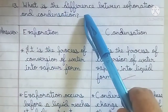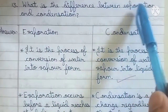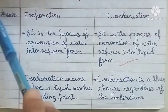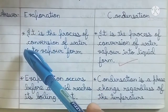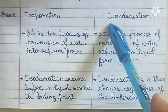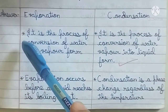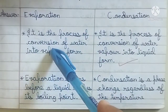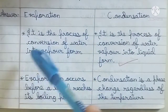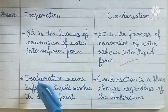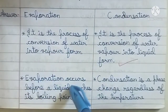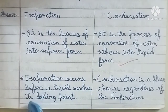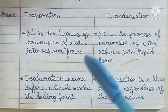What is the difference between evaporation and condensation? Evaporation is the process of conversion of water into vapor form. Evaporation occurs before a liquid reaches its boiling point.